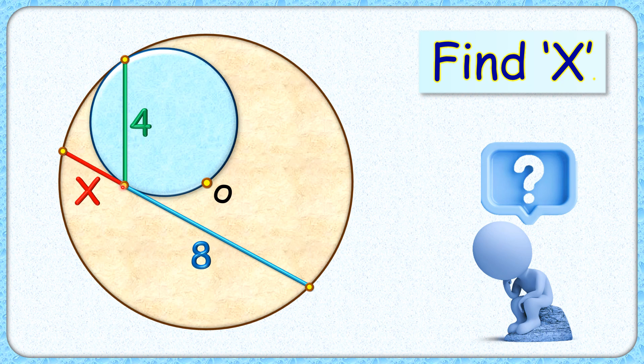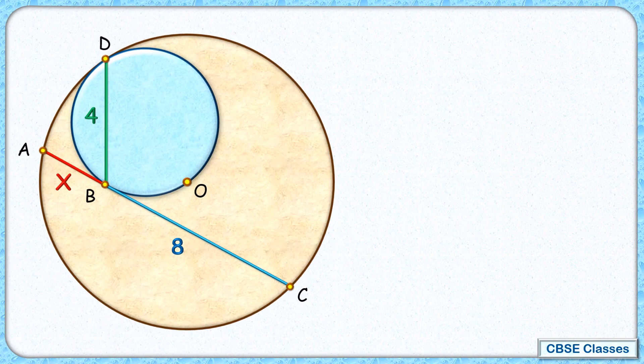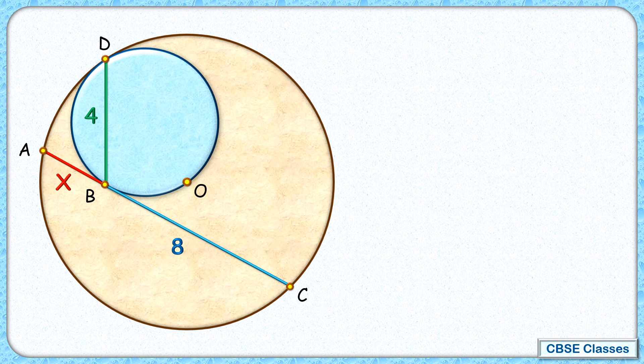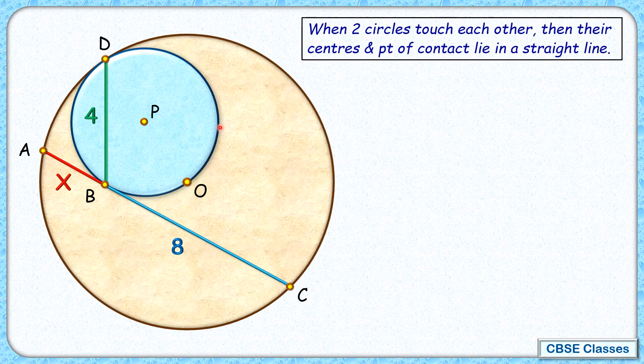Or value of x. Let's check this interesting solution. Let's start by assuming the center of this blue circle is point P. Now we know that by theorem, if two circles are touching each other, then their centers and point of contact lie in a straight line. So here this point of contact D and the centers point O and point P will lie in a straight line.